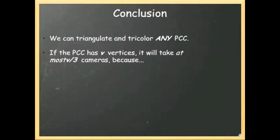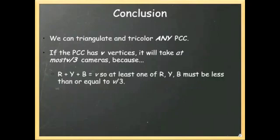Well, if you add up the number of red vertices, the number of yellow vertices, and the number of blue ones, R plus Y plus B, that has to add up to V the total number of vertices, right? Well, that means that at least one of those three numbers, R, Y, or B must be less than or equal to V over 3. What if none of them were less than or equal to V over 3? In other words, what if they were all bigger than V over 3? If that were true, they would add up to more than V. So that can't be true. At least one of them must be no bigger than V over 3.